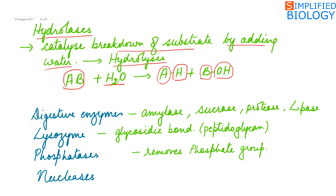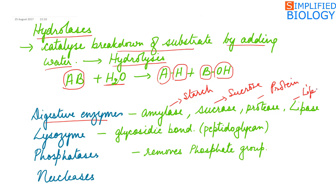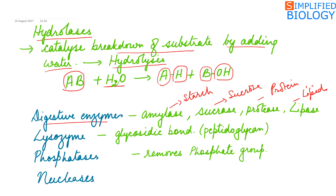The best examples of hydrolases are digestive enzymes: amylase hydrolyzes starch, sucrase hydrolyzes sucrose, protease hydrolyzes proteins, and lipase hydrolyzes lipids. Another example is lysozyme, which acts on the peptidoglycan cell wall of bacteria — it breaks the glycosidic bond formed between N-acetylglucosamine and N-acetylmuramic acid.